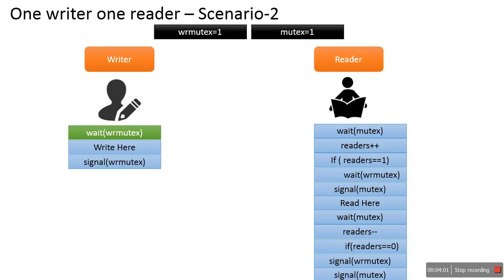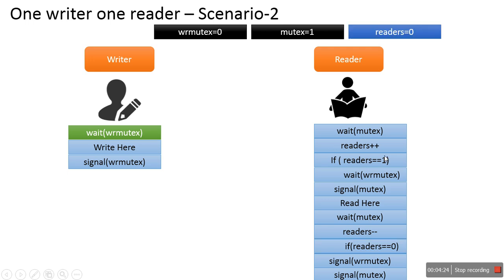In the second scenario, we assume that a writer is writing something to a file and at the same time a reader wants to read. In the writer code we use a semaphore wr_mutex, and in the reader code we use a semaphore mutex and wr_mutex, plus one variable called readers. So we have two semaphores and one variable in total.